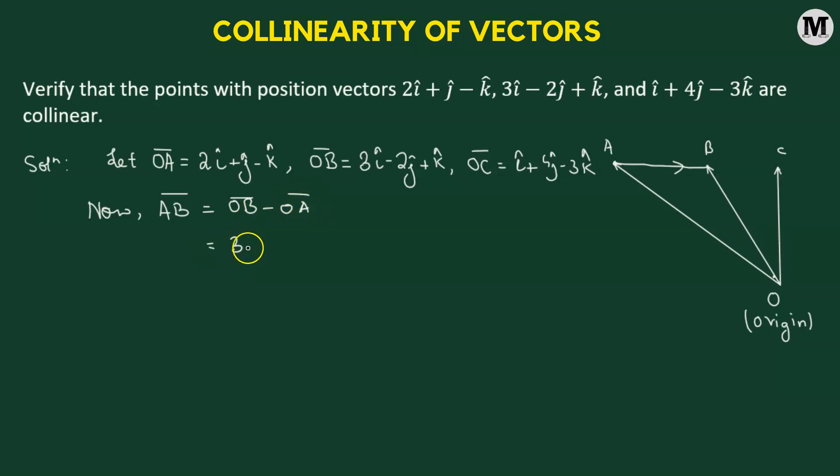The OB vector, we have 3i cap minus 2j cap plus k cap. From here, we're going to subtract OA vector. That's 2i cap plus j cap minus k cap.